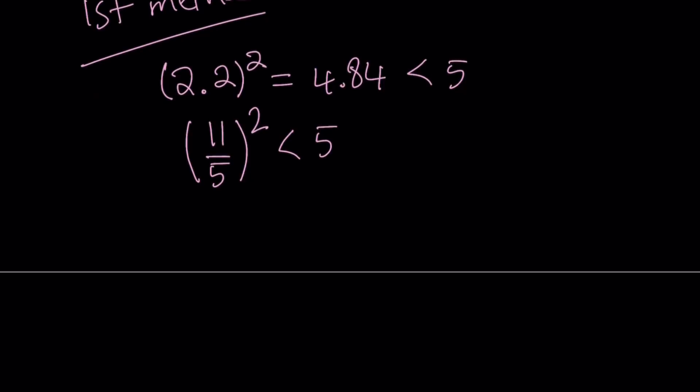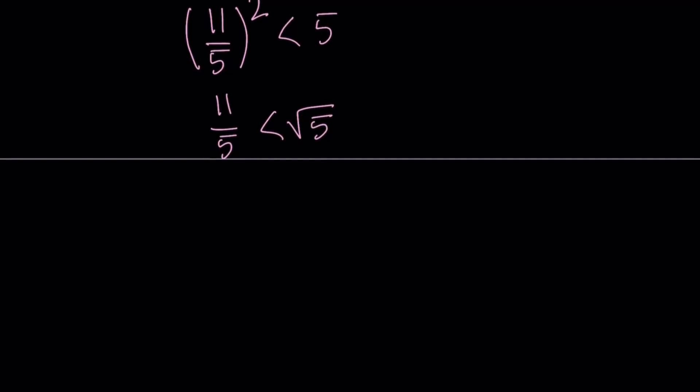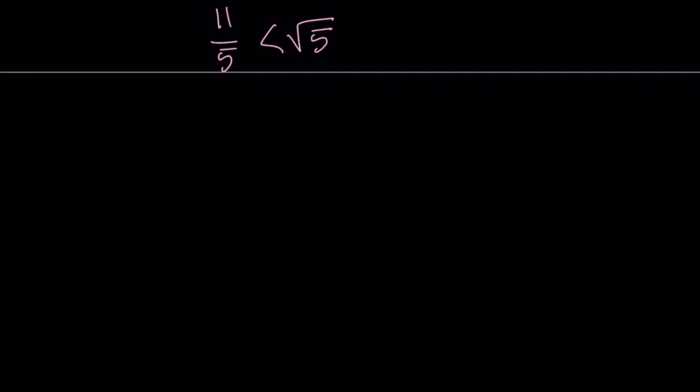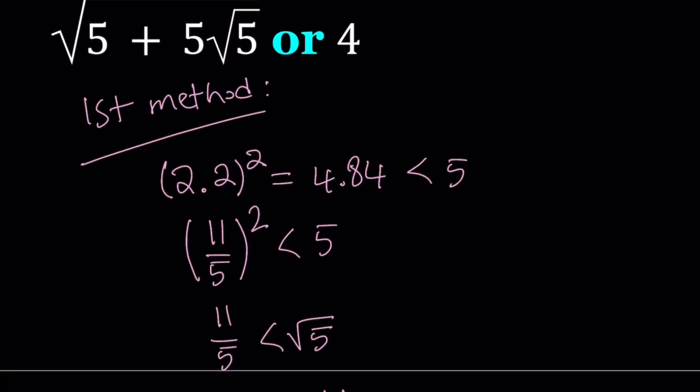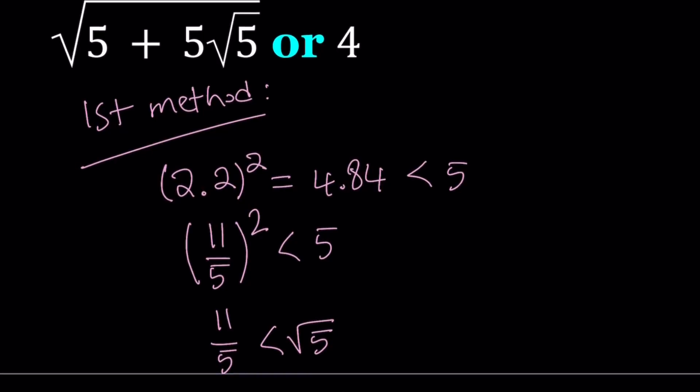Let's go ahead and square root both sides by using the positive square roots, of course, and this is going to give us the following. This is really nice because I can multiply both sides by 5 and that gives me, 5 root 5 is going to be greater than 11. Why did I want to get to 5 root 5? Because I have 5 root 5 under the radical, but I also have to add a 5 to it.